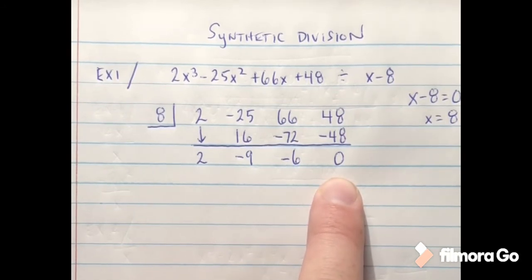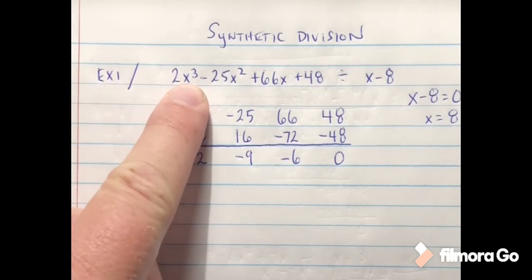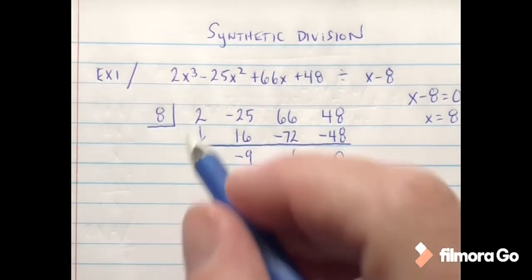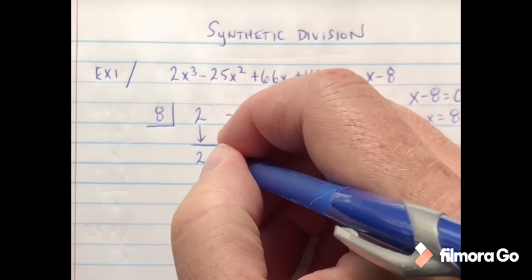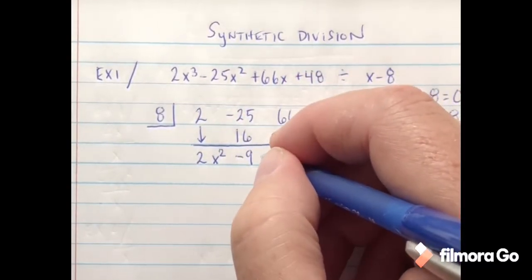Again, anytime that last number is a zero, that's an indicator that we do not have a remainder. So when we go to write our answer now, basically we're going to go back up to our original problem. We know our highest degree is an x to the third, so I'm going to subtract one from that and that makes this 2x to the second.